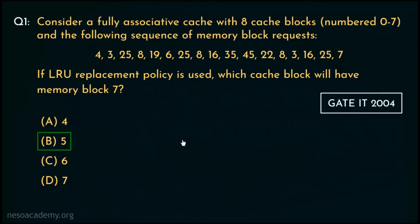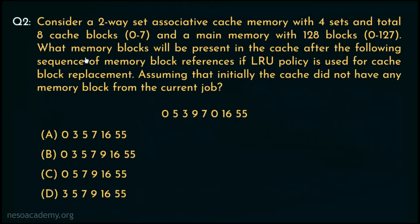For a fully associative cache with some block requests, to solve such problems we must maintain one LRU list, updating the list on cache hits as well as whenever replacement takes place. Now let's get to the next question.